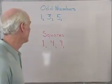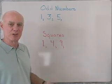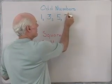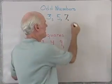First of all, I have over here the sequence of odd numbers: 1, 3, 5. If I ask you what the next number in that sequence is, you'll say 7. If I ask you what the number after that is, you'll say 9.